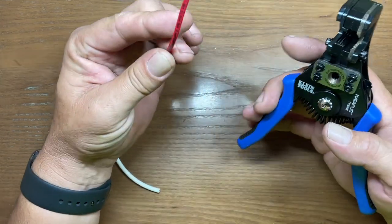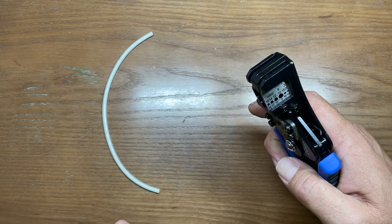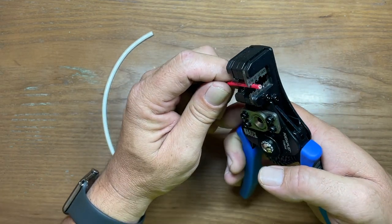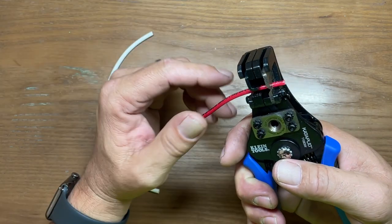Now, what I like about these is they make a very, very precise cut. So here's an example. We're going to be using a 12 gauge stranded here. So I'm going to strip off just about a quarter inch here.